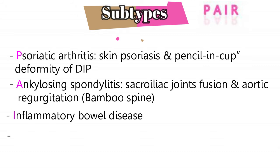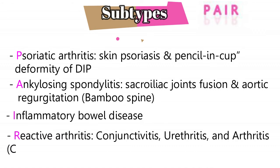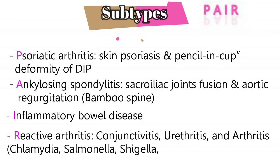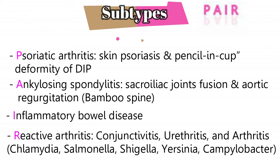Finally, R is for reactive arthritis, also known as Reiter syndrome, which is basically conjunctivitis, urethritis, and arthritis. It is caused by Chlamydia, Salmonella, Shigella, Yersinia, and Campylobacter.